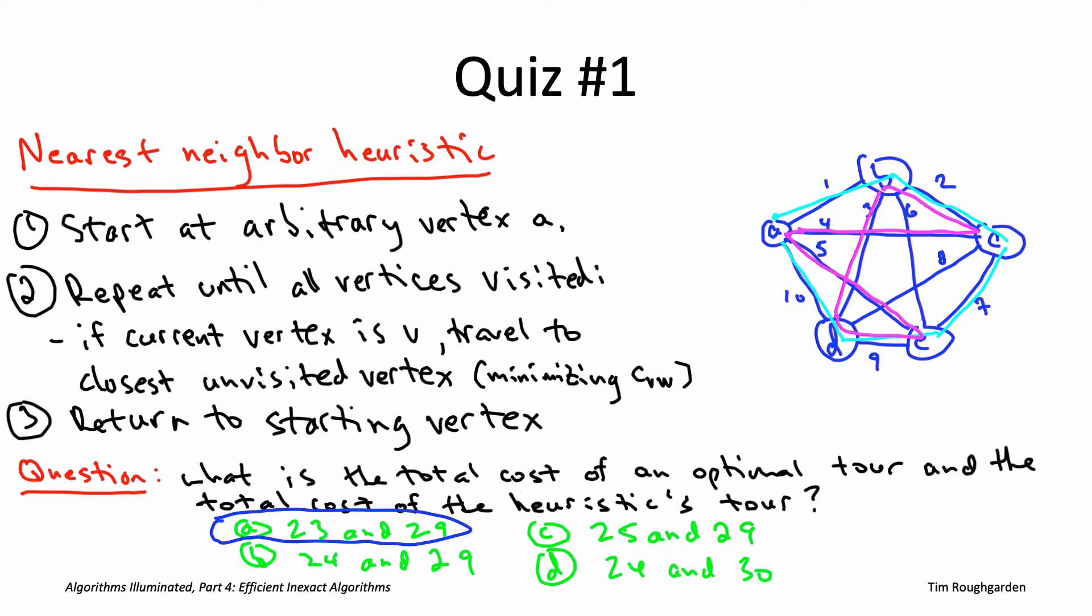What's the takeaway from this quiz? We see that the nearest neighbor heuristic need not compute a minimum cost traveling salesman tour. We're hardly surprised - I've told you TSP is NP hard, this algorithm runs in polynomial time, so if it were always correct, that would refute the P not equal to NP conjecture.